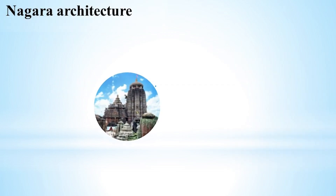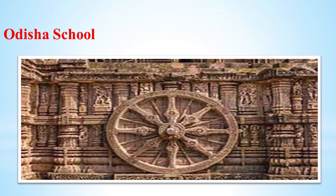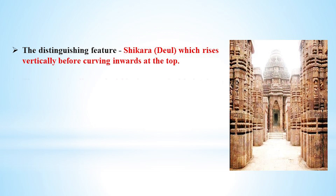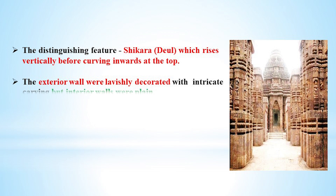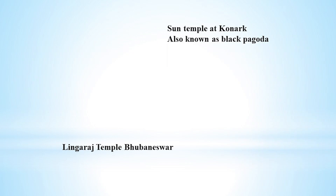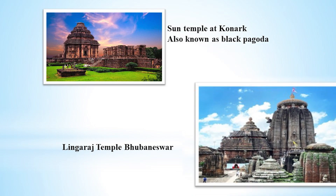The next classification is based on geographical presence, divided into three categories: first is the Odisha school, second is the Solangi school, and third is the Khajuraho school. The unique feature of the Odisha school is the Shikara, which rises vertically before curving inward at the top. The exterior walls are decorated with intricate carving, but interior walls are without any decorations. The temples have boundary walls. Examples include the Sun Temple at Konark, also called the Black Pagoda, and the temples of Bhubaneshwar.